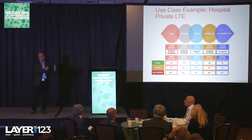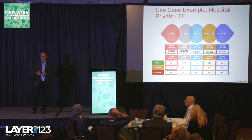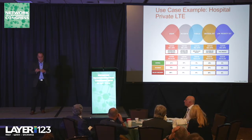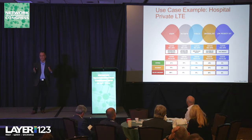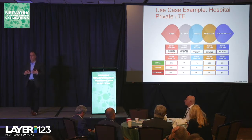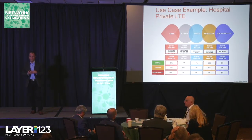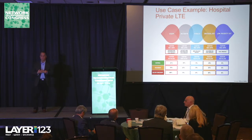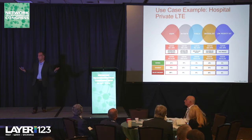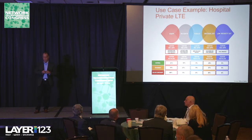In the hospital private LTE use case, we can allocate slices for different uses: staff get one slice, patients and visitors get another, and IoT medical devices get their own slice. NetSias software provides a very dynamic way to do slicing. So if there's an emergency — like an earthquake and casualties coming into the hospital — you can assign more bandwidth to the staff with the push of a button on an iPad. Similarly, after Hurricane Maria in Puerto Rico, you could just drop a private LTE and provide coverage almost instantly for that area.